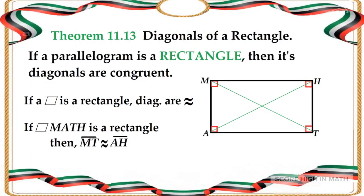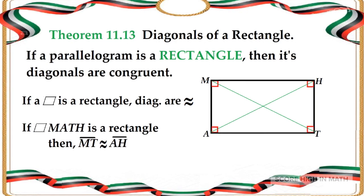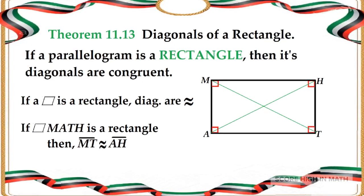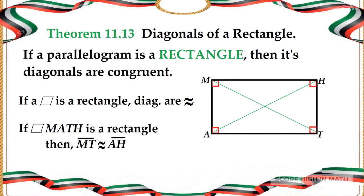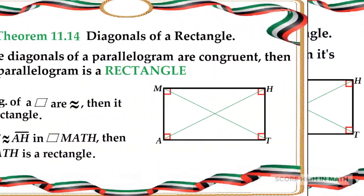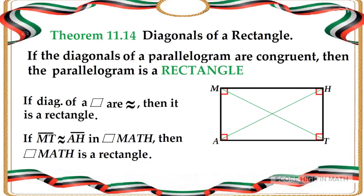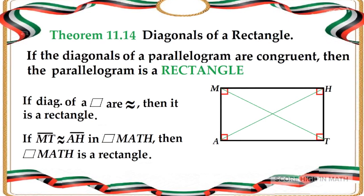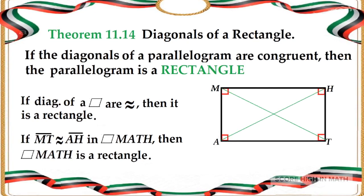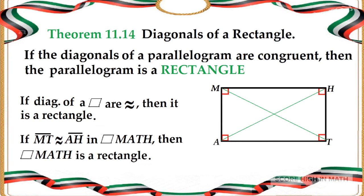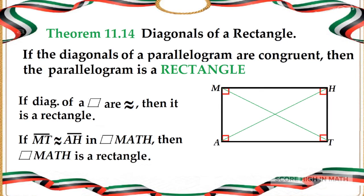To sum it up, always remember Theorem 11.13: if a parallelogram is a rectangle, then its diagonals are congruent — line segment MT is congruent to line segment AH. And in Theorem 11.14: if the diagonals of a parallelogram are congruent, then the parallelogram is a rectangle. So if line segment MT is congruent to line segment AH in quadrilateral MATH, then it is a rectangle.